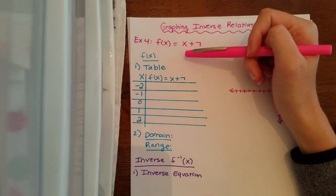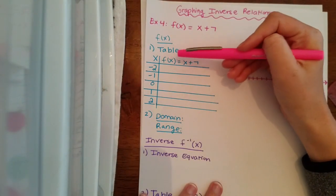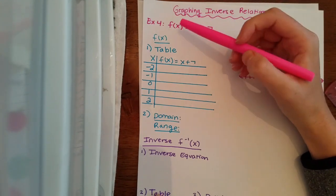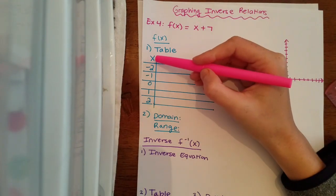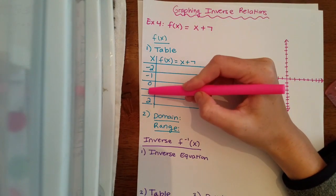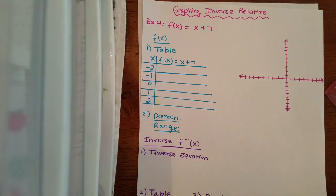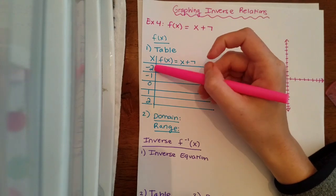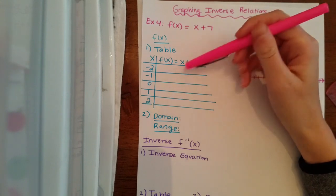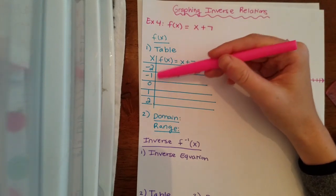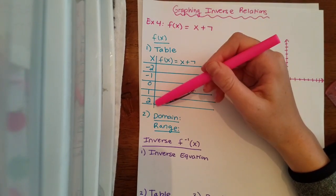Whenever we start these, we're going to make a table of values of x's and y's. Remember, f of x is the same thing as y. When we make a table, it's really good to pick some negatives, some positive numbers, and zero. I personally always pick negative two, negative one, zero, one, and two, because they're small values that are a little bit easier to solve with, but you can really pick any numbers you want.